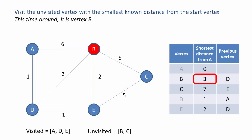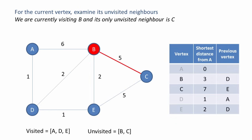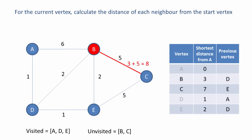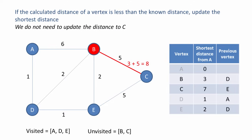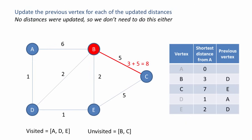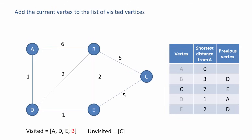We visit the unvisited vertex with the smallest known distance from the start vertex — this time it's B. For the current vertex, we examine its unvisited neighbours. We're currently visiting B, and its only unvisited neighbour is C. We calculate the distance: the total distance from A to C is 8. The value in the table for C is currently 7, so we don't need to update it. No distances were updated, so we don't update the previous vertex either. We add B to the list of visited vertices; B won't be visited again.